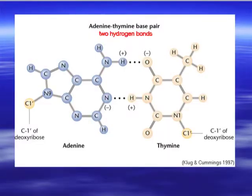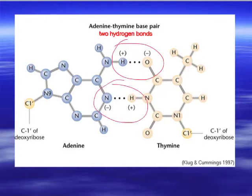Here's another example of hydrogen bonds forming between hydrogen, which is positively charged, and oxygen, which is negatively charged, on two nitrogen base pairs found in DNA. There's also an example where the hydrogen bond forms between hydrogen and nitrogen — the hydrogen is positively charged and the nitrogen is negatively charged. We'll talk more about that when we get to the DNA unit.